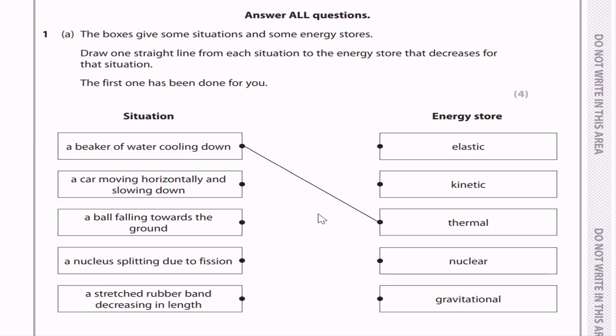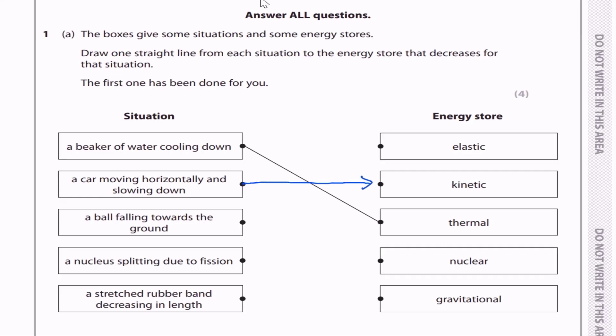A car moving horizontally and slowing down — decreases kinetic energy store. A ball falling towards the ground — decreases gravitational potential energy.